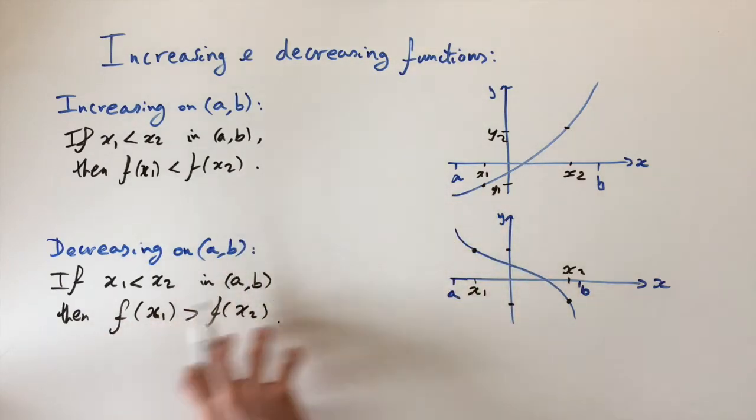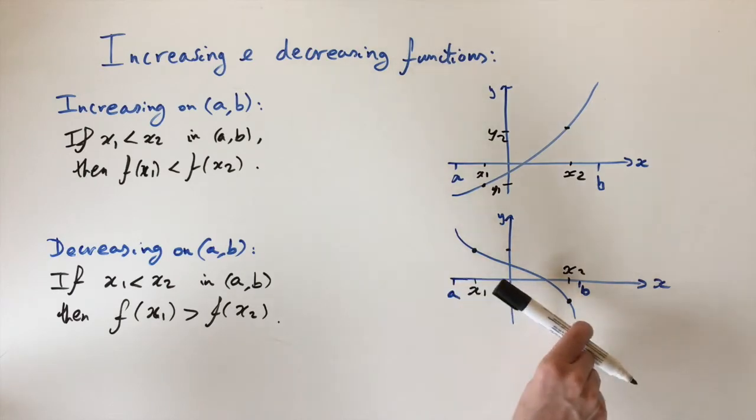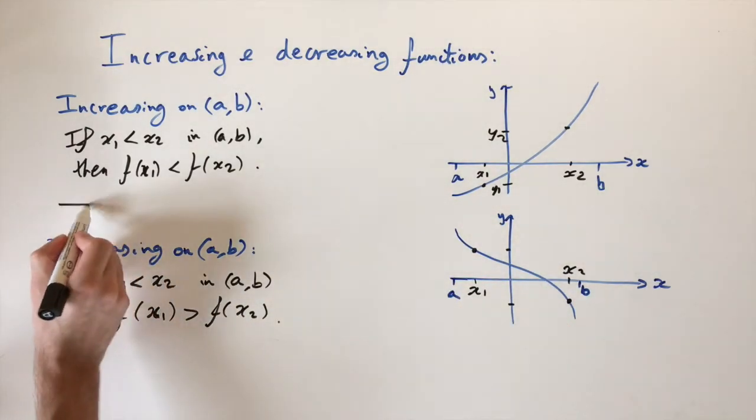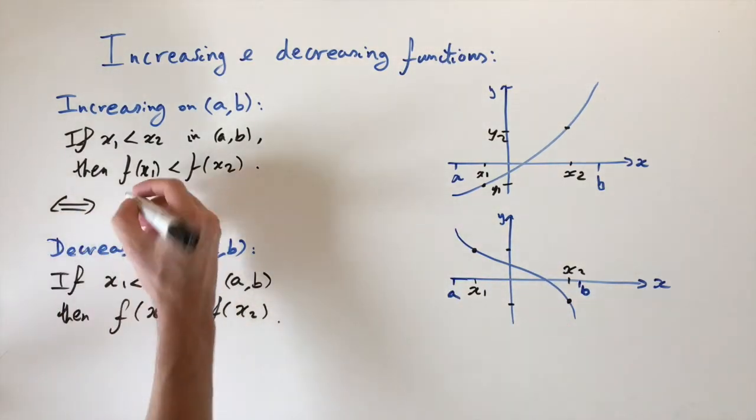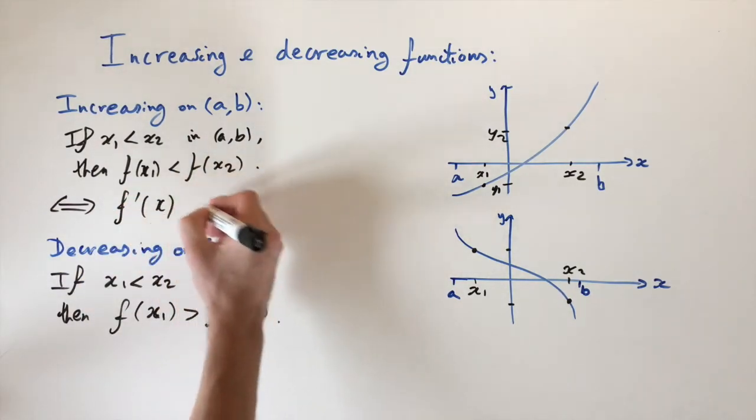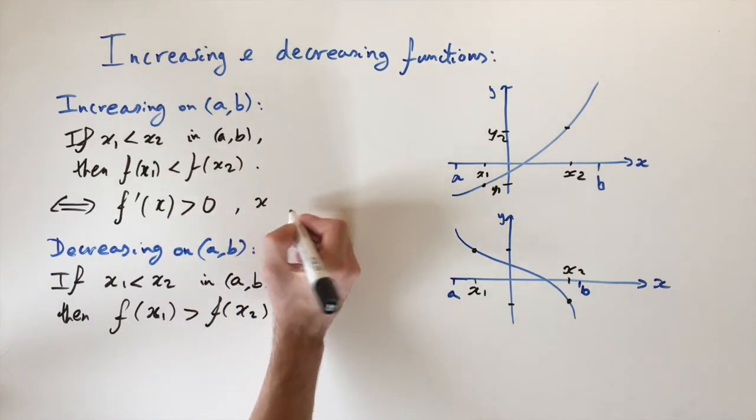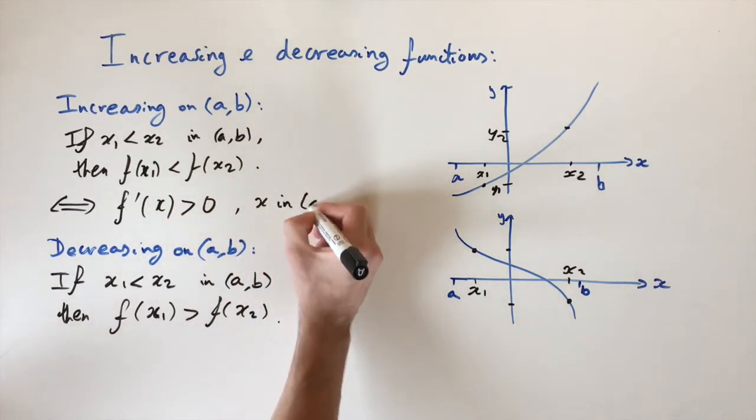So that's like an equivalent way of thinking about it. And then similarly, if it's decreasing, then the tangent, the gradient of the tangent is always going to be negative. So I'm just going to write down here, this is equivalent to f'(x), this is always strictly positive for x in the interval (a,b).